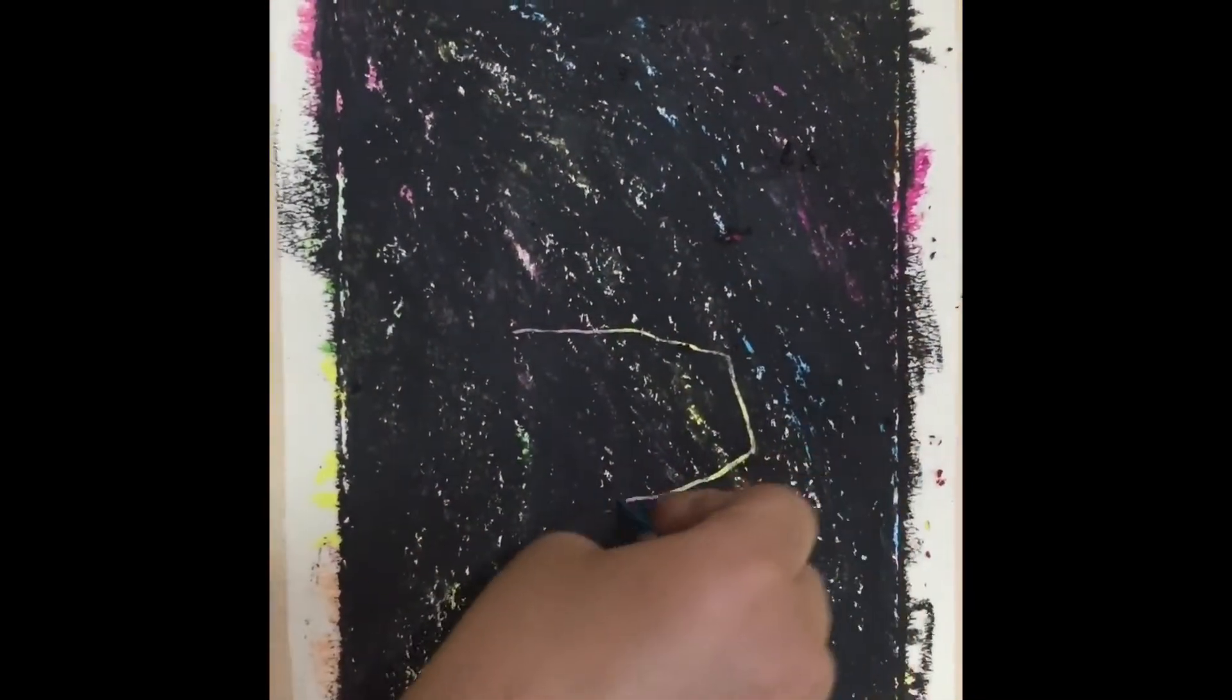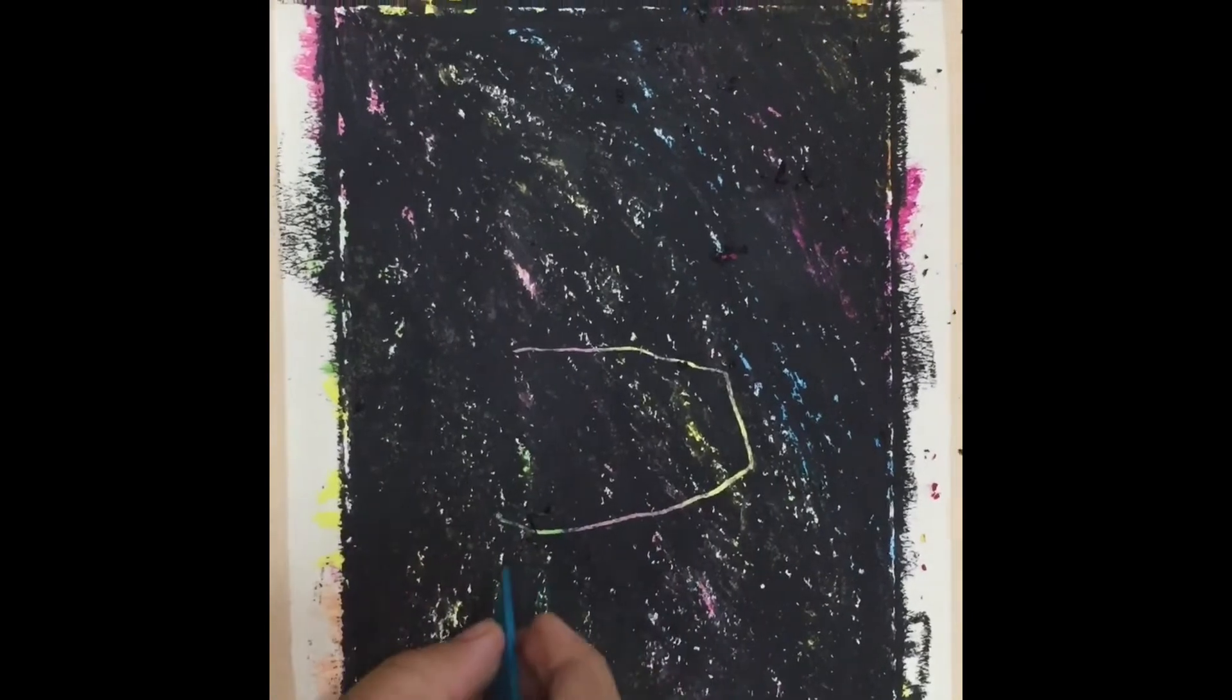You can now write on it with a sharp object and the colors will reveal as you draw on it.